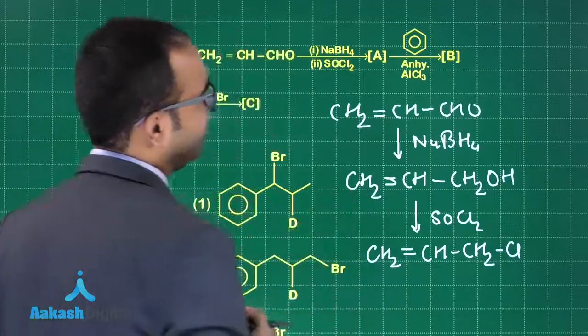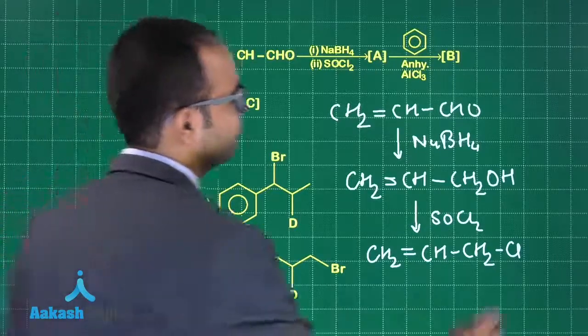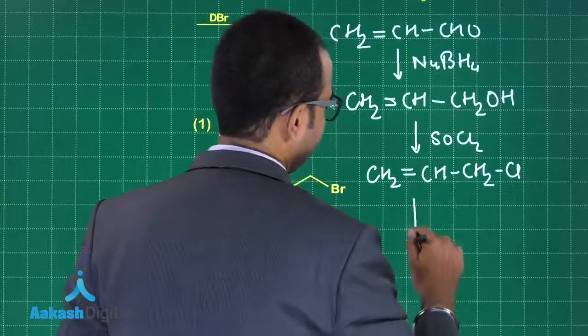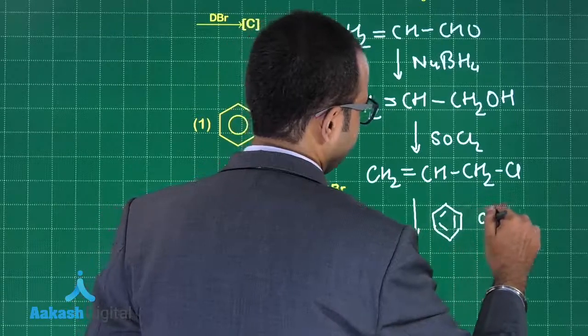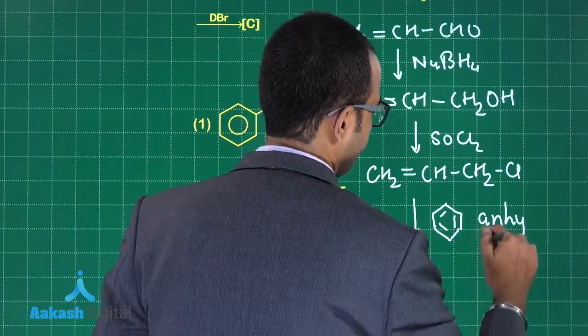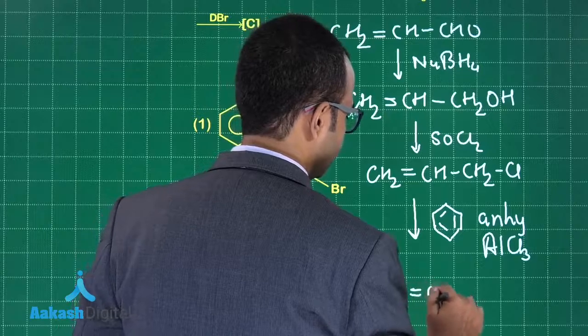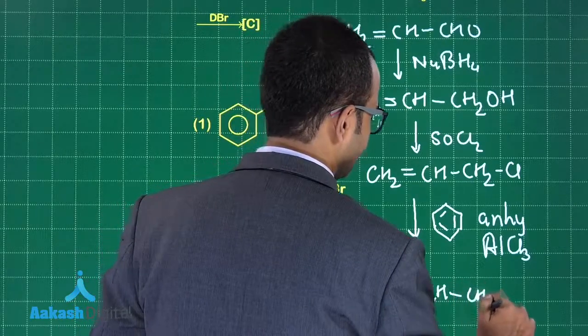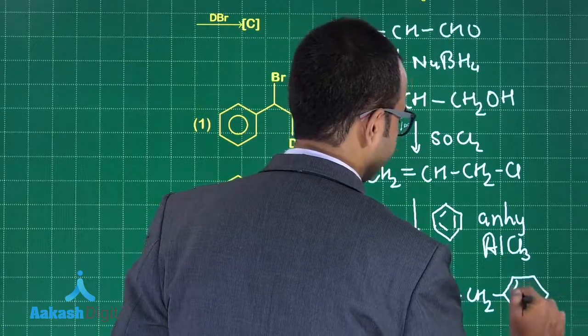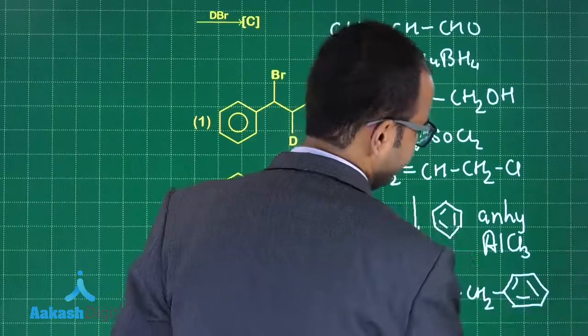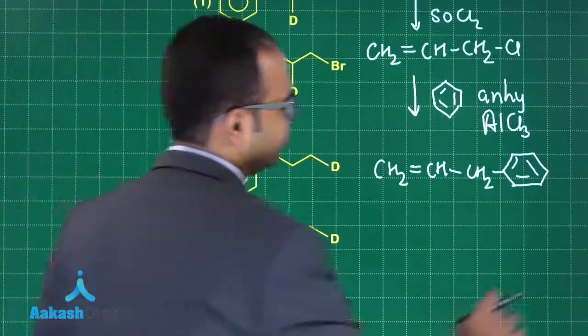After that you are adding a benzene ring in presence of anhydrous AlCl3. You are carrying out Friedel-Crafts alkylation. As we carry out Friedel-Crafts alkylation, in presence of anhydrous AlCl3, this will give you CH2=CH-CH2 and here I will get a benzene ring attached. Are you understanding till this point?